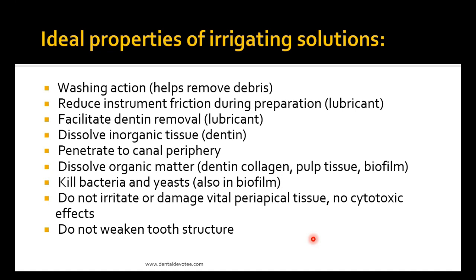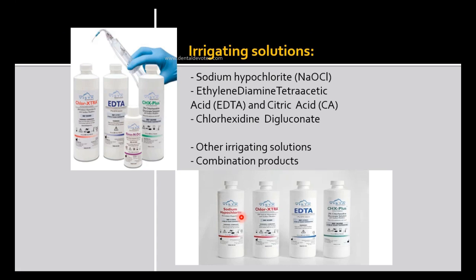The ideal properties of irrigating solutions — important for a short answer question. A good irrigating solution should have good washing action, help remove debris, reduce instrument friction during preparation, act as a lubricant, facilitate dentine removal, dissolve inorganic tissue (dentine), penetrate to the canal periphery, dissolve organic matter, kill bacteria and yeast, not irritate or damage vital periapical tissue, not have cytotoxic effects, and not weaken the tooth structure.